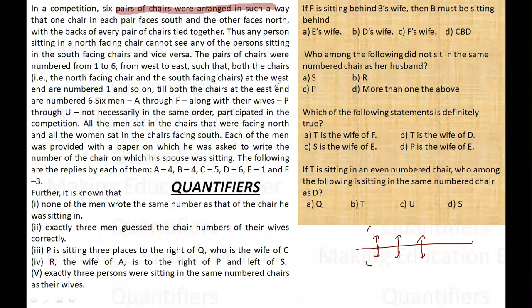The pairs of chairs were numbered from one to six from west to east. There are six men A through F and their six wives P through U. They are sitting not necessarily in the same order. They participated in the competition. All the men sat on the chairs that are facing north, women are sitting in this direction.